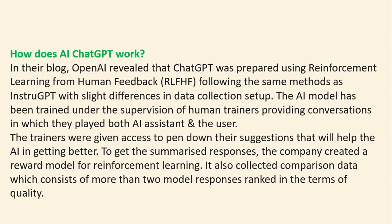How does it work? OpenAI revealed that ChatGPT was trained using reinforcement learning with human feedback, following a similar method to InstructGPT with slight differences in data collection. The AI model was trained under the supervision of human trainers who provided conversations in which they played both the AI assistant and the user. The trainers were given suggested responses to help the AI improve. The company also created a reward model for reinforcement learning, collecting comparison data consisting of more than two model responses ranked by quality.